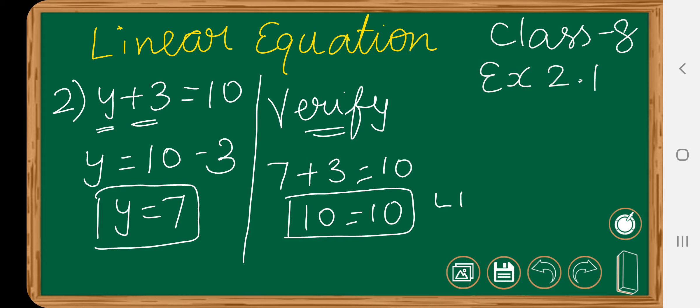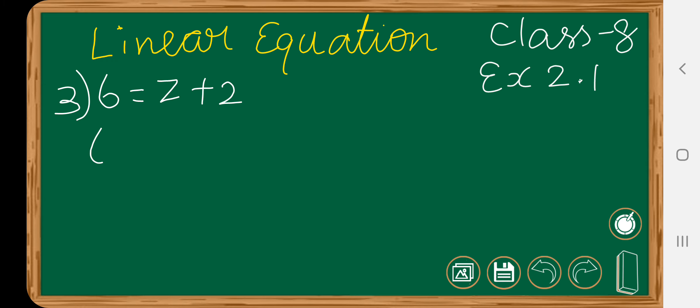Now let's see third question: 6 is equals to z plus 2. Now we want to find the value of z. This plus 2 will become minus 2 equal to z. 6 minus 2 is 4 equals to z.